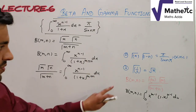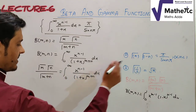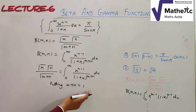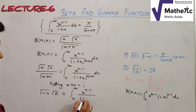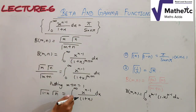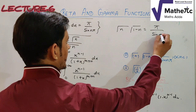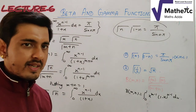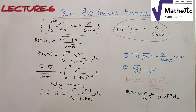Since the result to prove has no m, we put m + n = 1, so m = 1 − n. This gives Γ(n)·Γ(1−n)/Γ(1) = ∫₀^∞ x^(n−1)/(1+x) dx. Since Γ(1) = 1, we have Γ(n)·Γ(1−n) = ∫₀^∞ x^(n−1)/(1+x) dx = π/sin(nπ). This definite integral formula is used directly, and so Γ(n)·Γ(1−n) = π/sin(nπ) is proved.